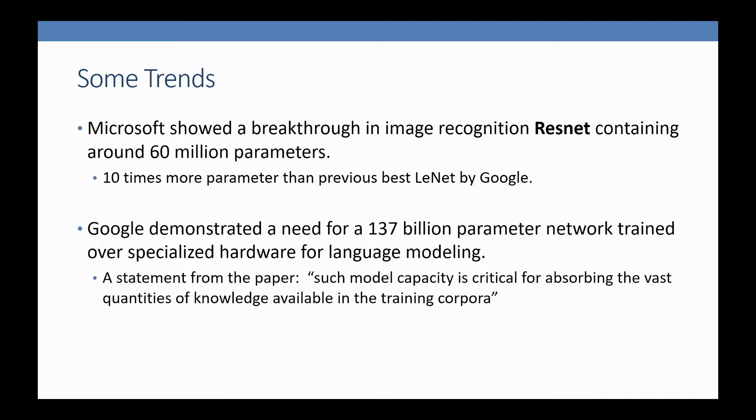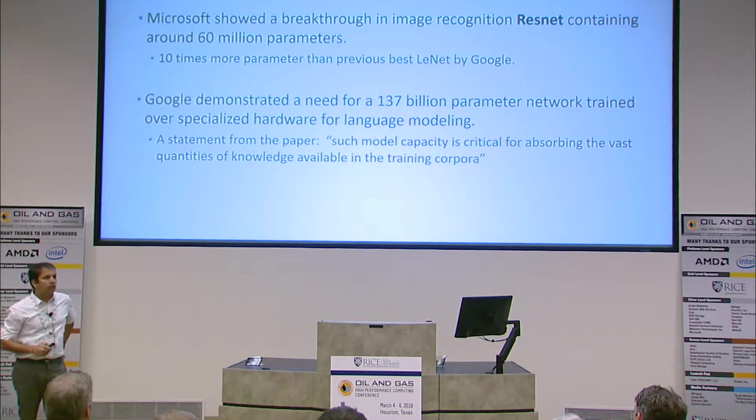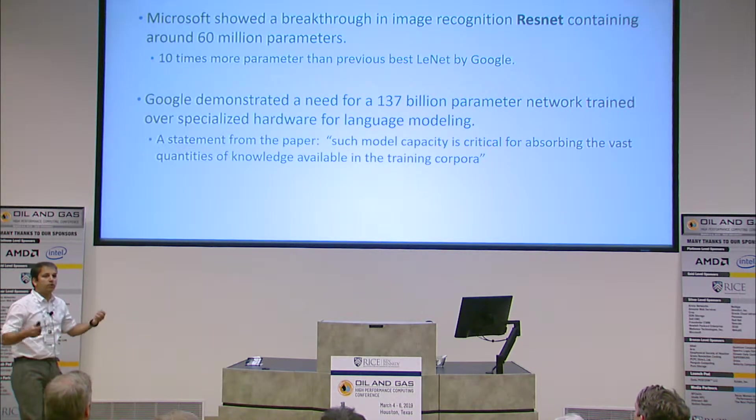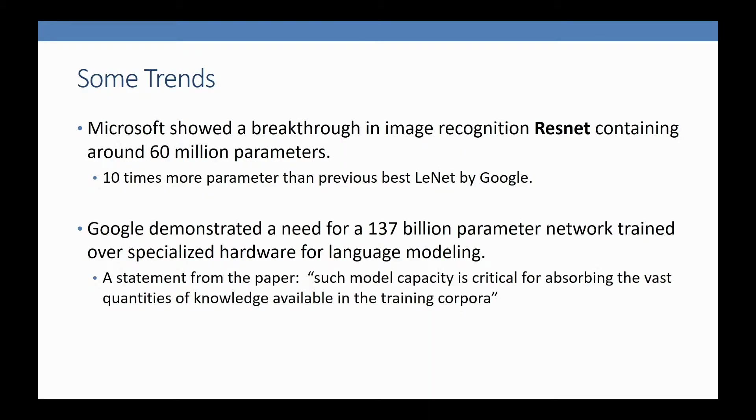ResNet is one example, considered a breakthrough in image recognition, with 10 times more parameters than the previously used LeNet model by Google. Google demonstrated the need for a 137 billion parameter network, trained using their TPUs. A statement from that paper is: such model capacity is critical for absorbing the vast quantities of knowledge available in the training corpora.